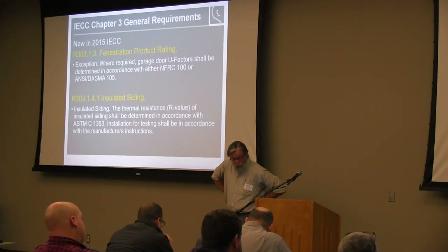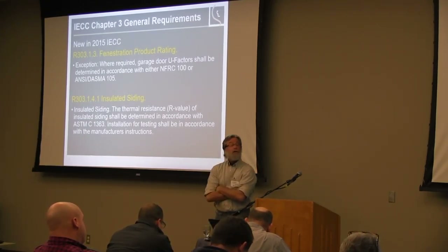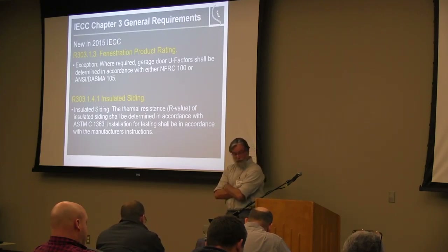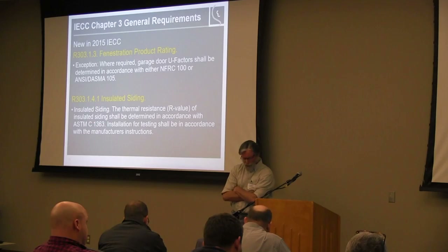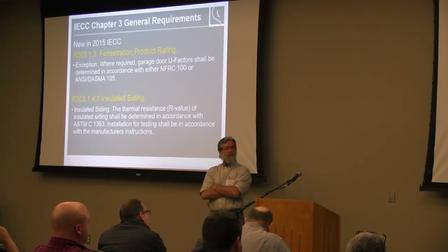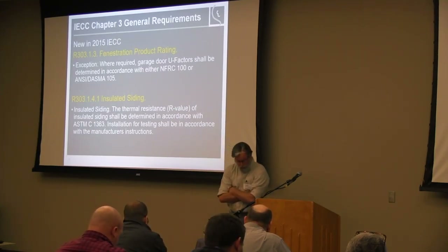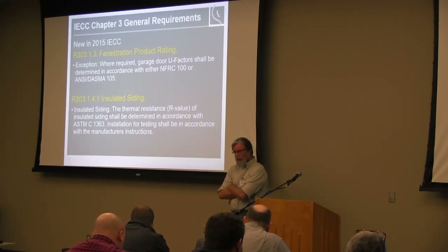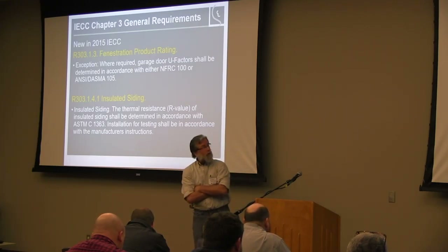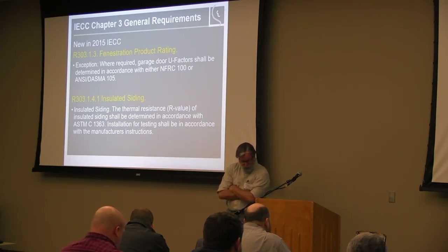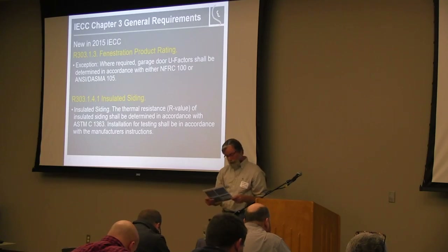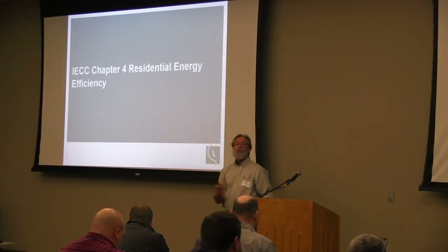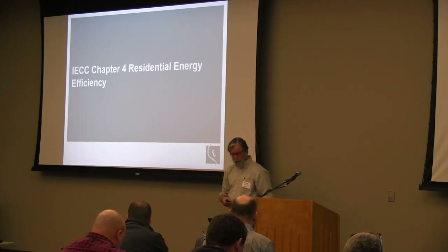One change new in the 2015 IECC is an exception under fenestration product ratings for U-factors on garage door windows — a minor item that most manufacturers are likely already aware of. Insulated siding is also called out with an ASTM standard it must comply with. Chapter 3 of the IECC is relatively light; Chapter 4 on residential energy efficiency is where we'll spend most of our time.